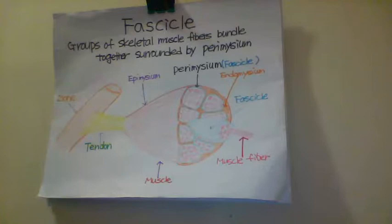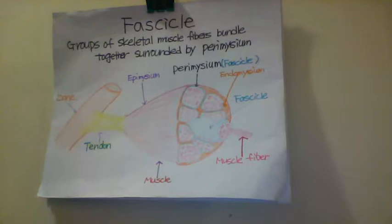A fascicle is a group of muscle fibers bundled together by a perimysium. Fascicle arrangements determine what type of movement a muscle can make and can be arranged in four different patterns.